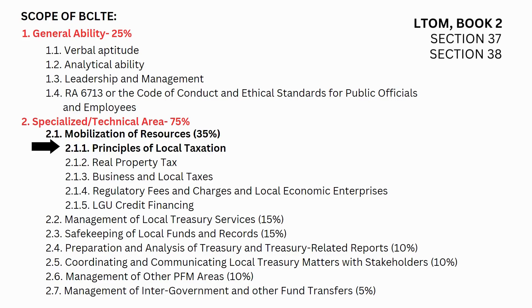Welcome. Our topic coverage for this review questions is all about Book 2 of Eltham, 2nd edition, Chapter 1 titled The Taxing Powers of Local Government Units, specifically Section 37, The Power of LGUs to Create Sources of Revenue, and Section 38, The Fundamental Principles of Taxing and Other Revenue Raising Powers of LGUs.